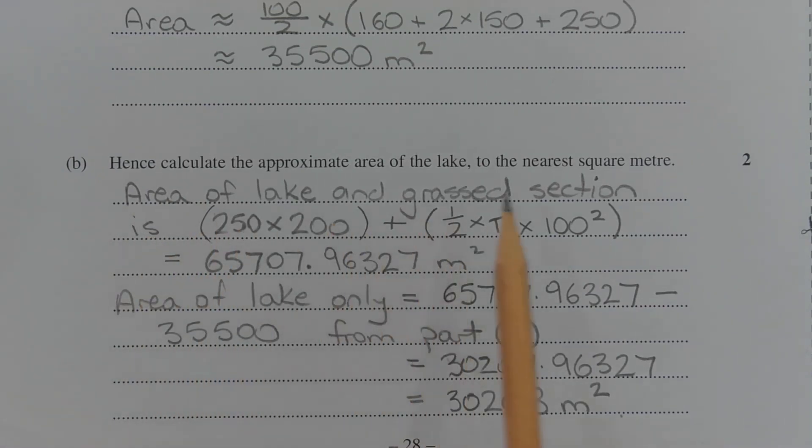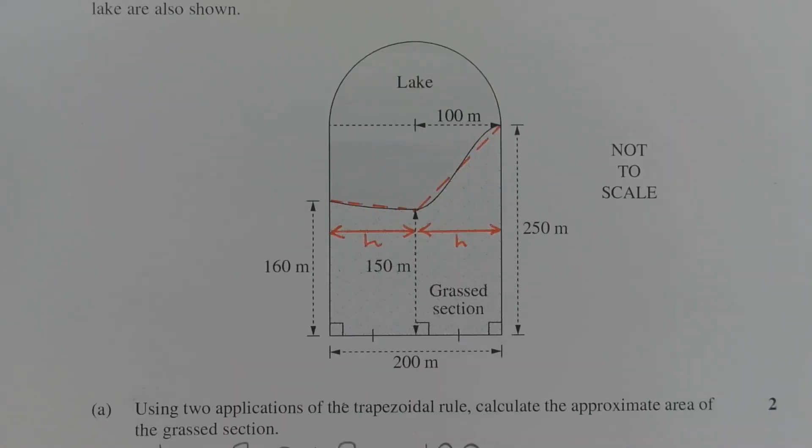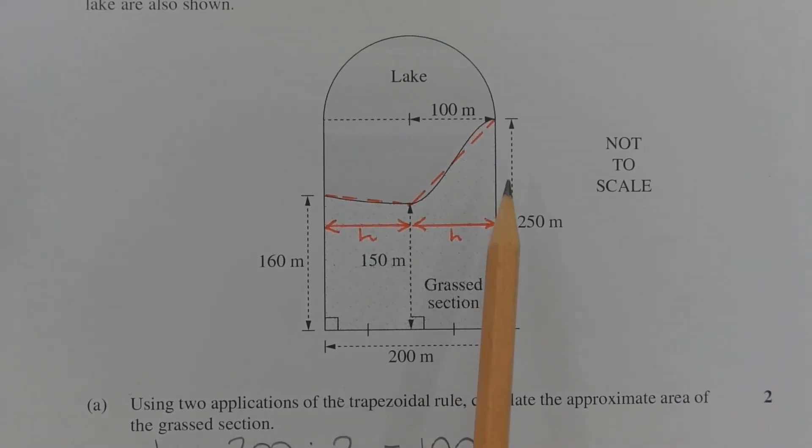The area of the lake and the grassed section is the sum of a rectangle and a semicircle. Referring back to the diagram, here is the rectangle. The dimensions are 200 and 250, so its area is 200 times 250. The area of the lake is a semicircle with radius 100 metres, so its area is half times pi times 100 squared.